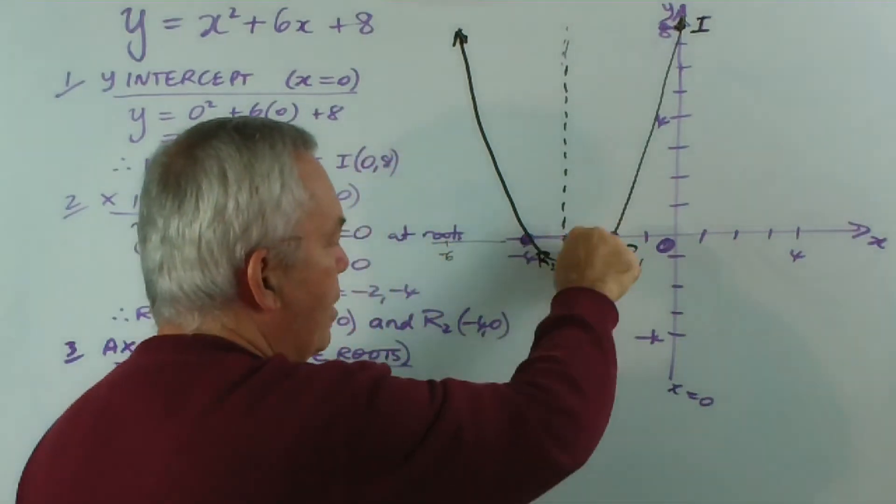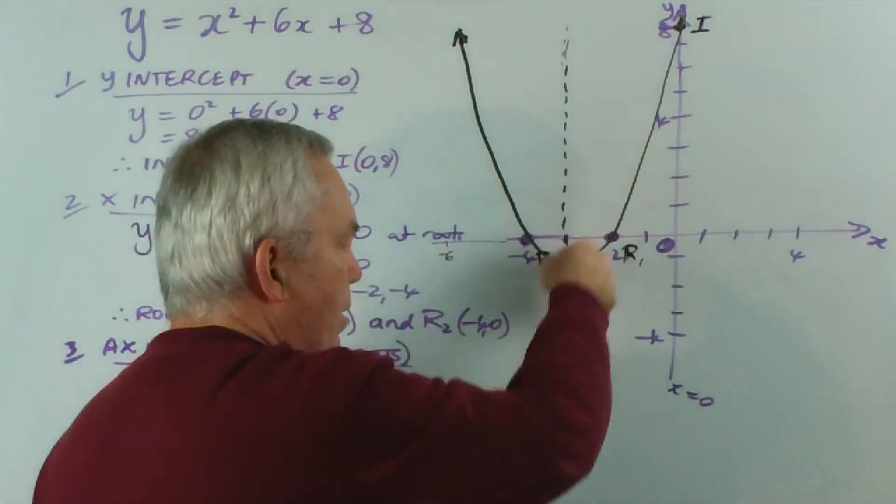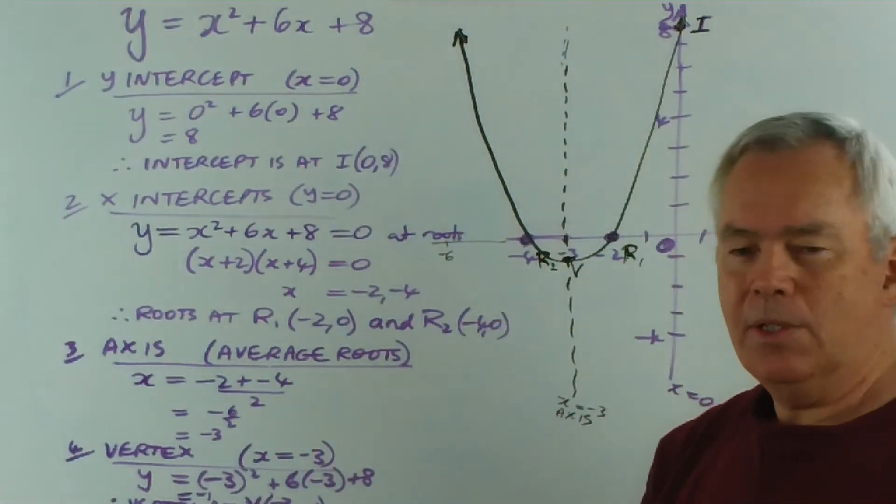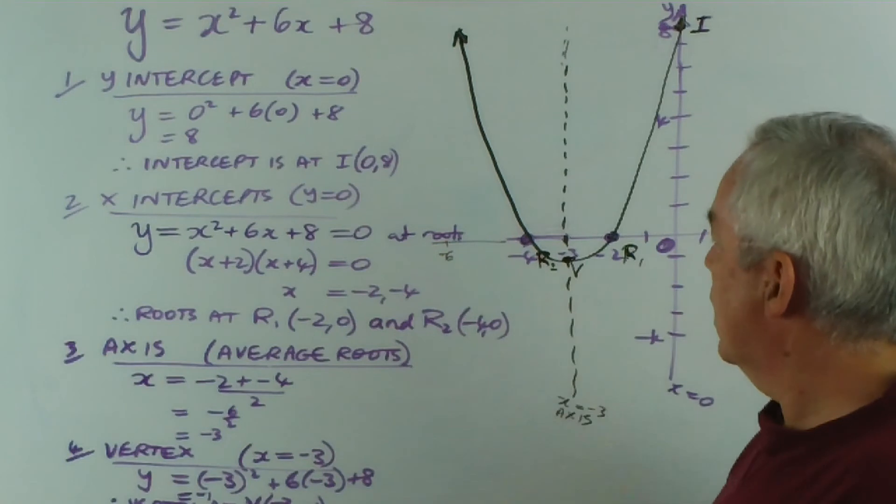Remember always to have a rounded tip, never an angle, because parabolas do not have points. They've got a rounded tip, a rounded vertex.